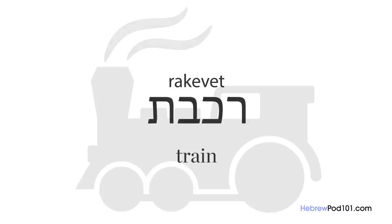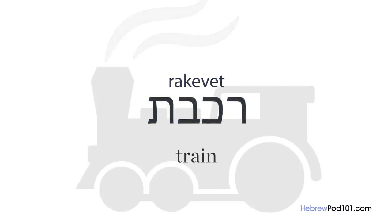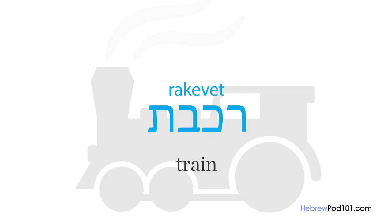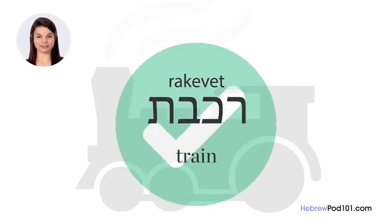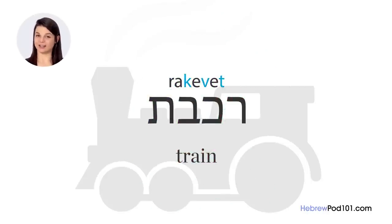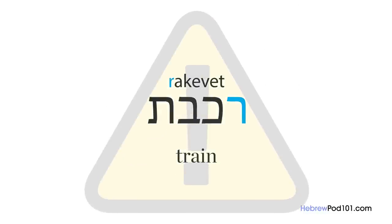For example, listen and repeat. Chances are your pronunciation was pretty spot on. The K, V, and T sounds are practically identical to English. It's only the R that's a little different. Focus on this first letter — it's often written as an R, but don't be fooled. This letter is pronounced differently than an English R; it's pronounced at the back of the throat, instead of forward in the mouth.